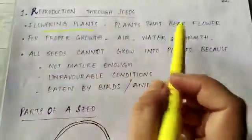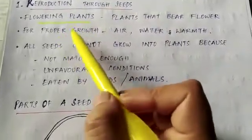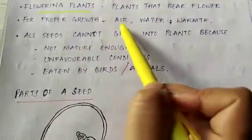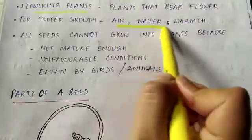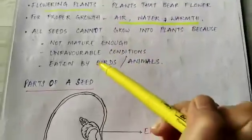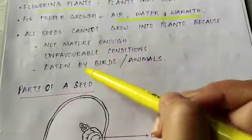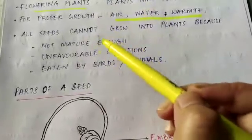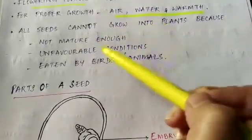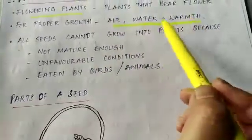We know the flowering plants. What are flowering plants? Those plants that can bear flowers are known as the flowering plants. For their growth, what do they require? They require air, water, warmth — these are the very important things required for their growth. Under proper conditions, a flower changes to fruits and the fruit contains seeds. Again, a seed can be grown into a new plant. So for proper growth, a plant requires air, water and warmth.